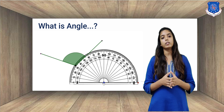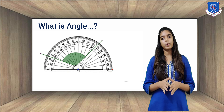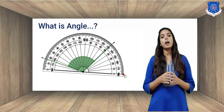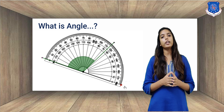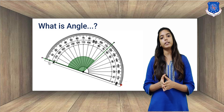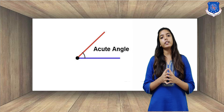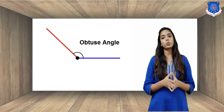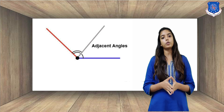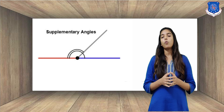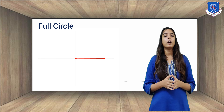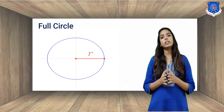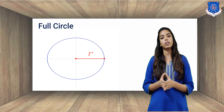What is an angle? An angle is the space between two intersecting lines or surfaces at or close to the point where they meet. There are different types of angles — for example, right angle, straight angle, acute angle, obtuse angle, etc. What is a full circle? There are 360 degrees in a full circle.